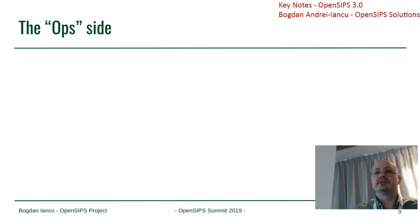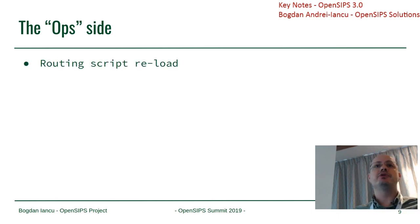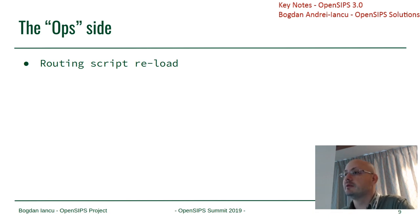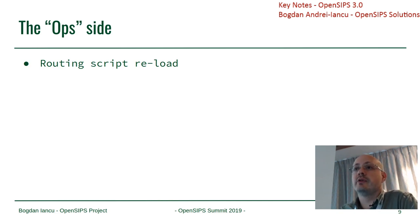The more interesting part — the operational side. When we announced the plan for 3.0, we had a poll trying to get feedback about what are the most demanded features from the community perspective. One of those was the so-called script reload, or more precisely, routing script reload.